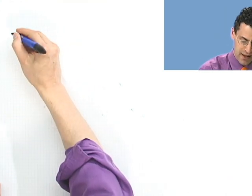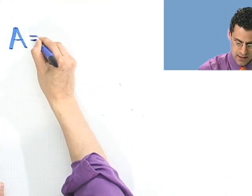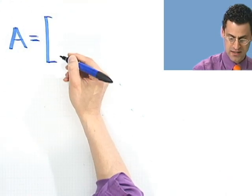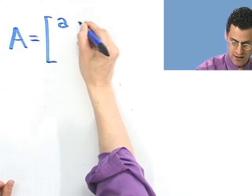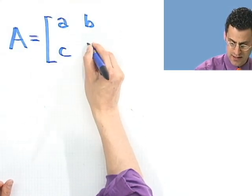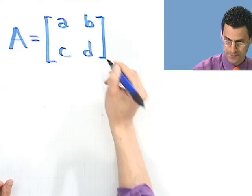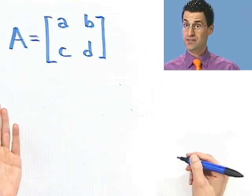So here's the formula. Suppose we have A equals, and let's just say it's a 2 by 2 matrix, a general matrix. So I have A, B, these are the entries, C and D. And the question is, what's the inverse of this matrix? Well, first of all, let me show you the notation.